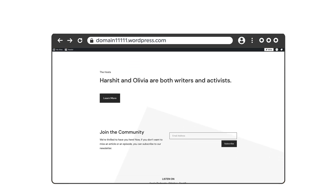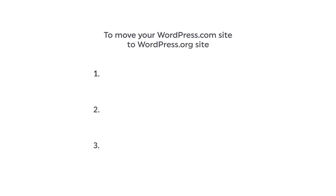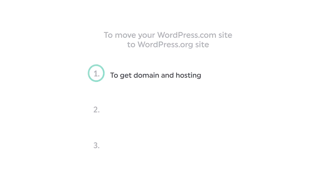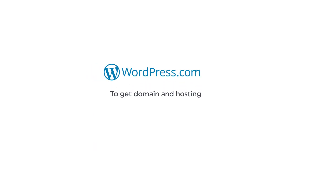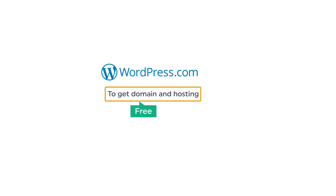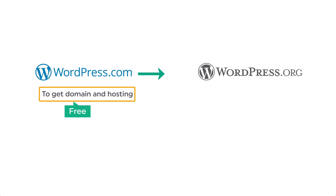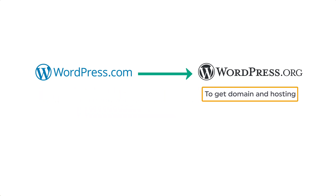So to move your WordPress.com site to WordPress.org site, we are going to do three steps. The first step is to get your new domain and hosting. Now as we said earlier, in WordPress.com we get a free domain and hosting for our website. So if we migrate our website from WordPress.com to WordPress.org, we need to get a separate domain and hosting for our website.